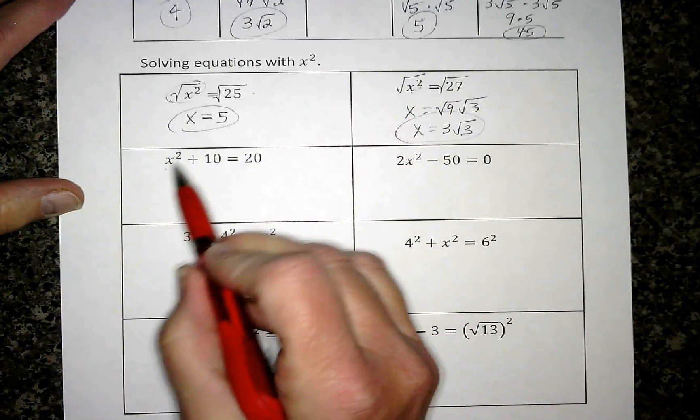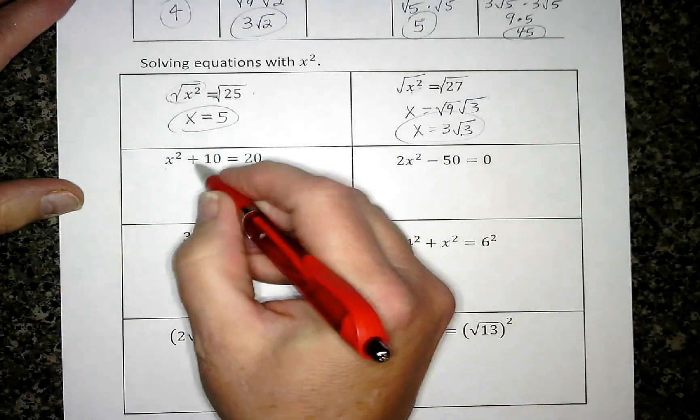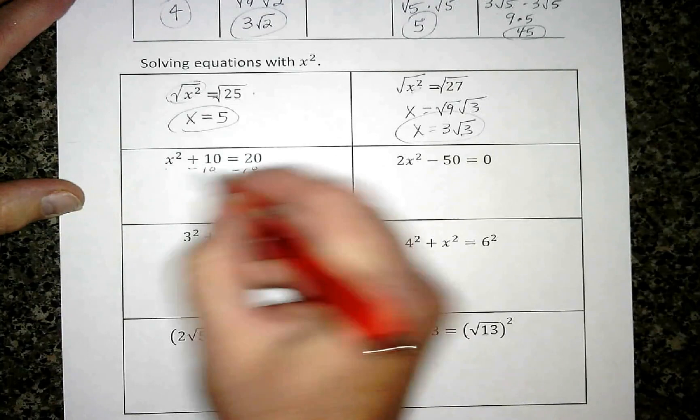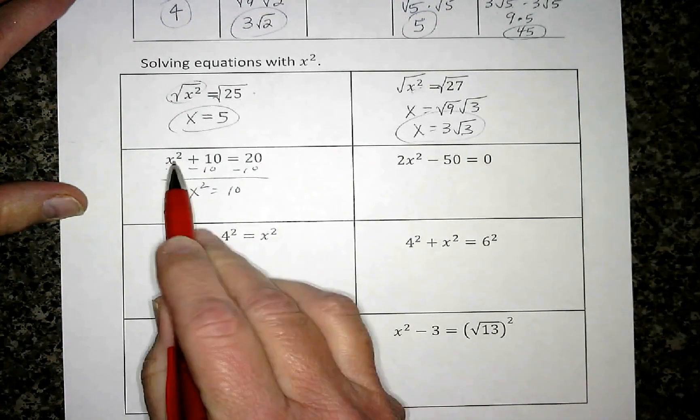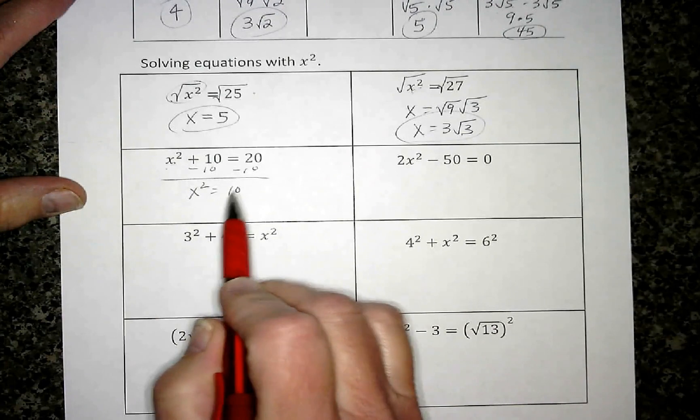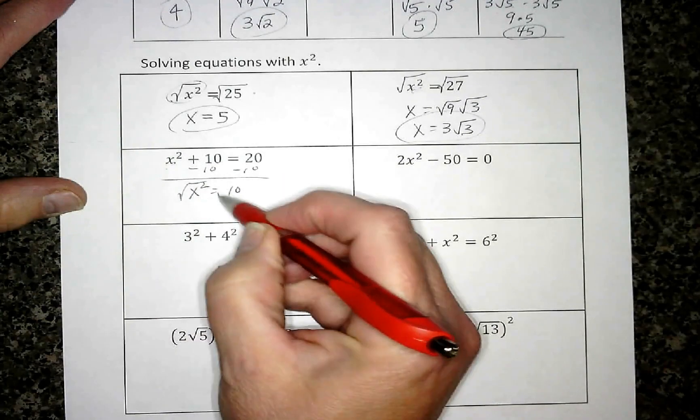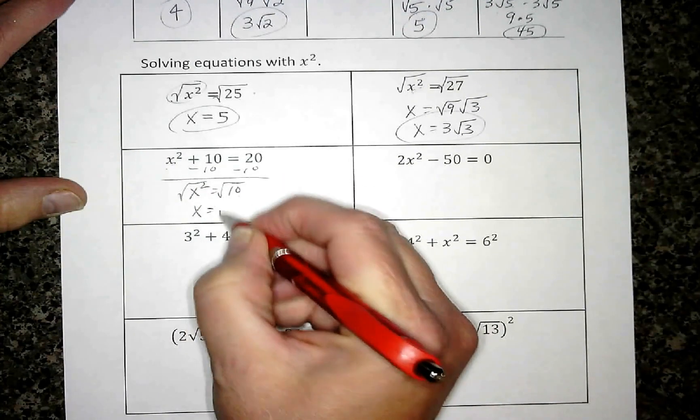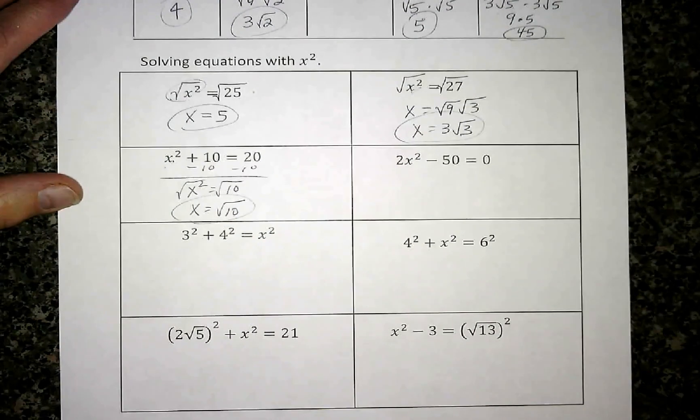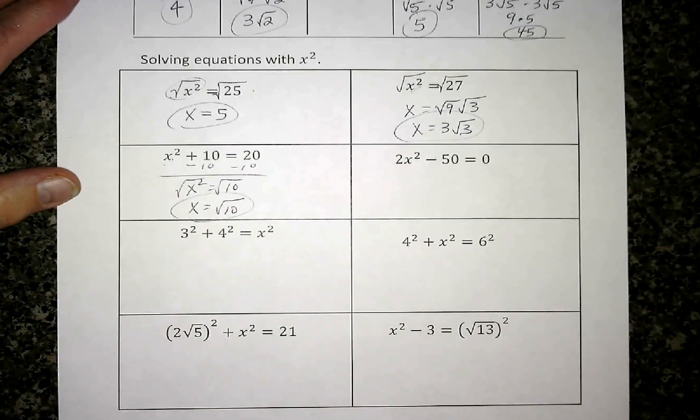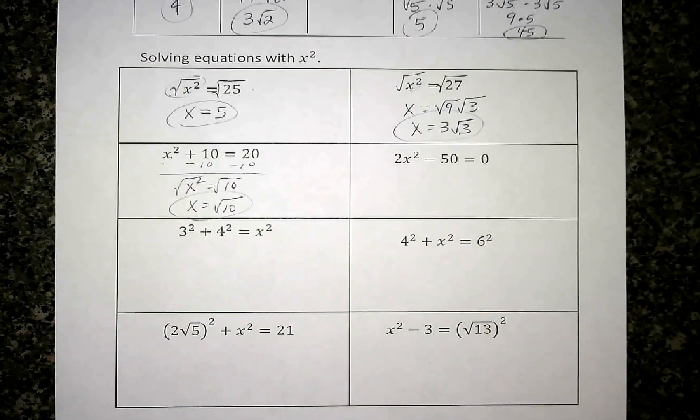We need to get the x² or the variable by itself, so I'm going to subtract 10 from both sides. So x² is what's left over here, equals 10. Square root both sides, that will give me x = √10. 10 is a number that cannot be simplified, so we just leave it √10.